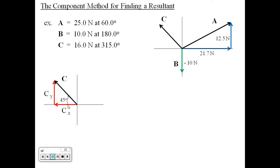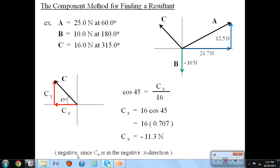C sub X is the adjacent side to my angle. So we're going to use a cosine function, which is the cosine of 45 is C sub X over 16. 16 being the length of vector C, the hypotenuse. Multiplying 16 across, and it turns out to have a value of 11.3 Newtons. I'm going to assign a negative sign to it. It's negative since it points in the negative X direction.